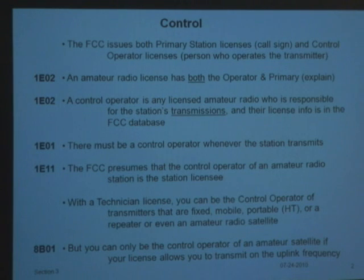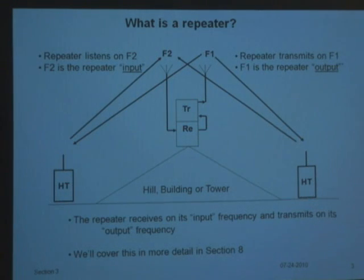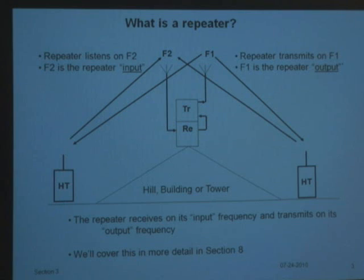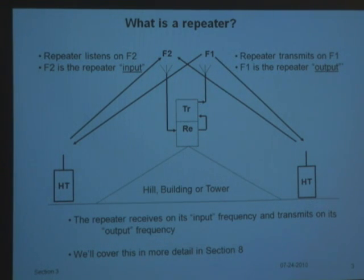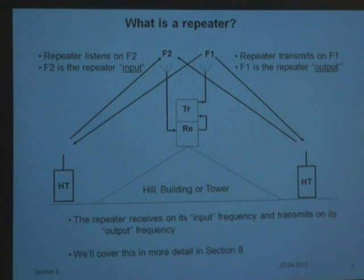Now let's get into repeaters. It's a little radio. If someone was over in Redondo Beach or Torrance, and someone else was on the other side of Palos Verdes down in the Terrace area, these two people cannot talk to each other directly on these frequencies because little radios don't go through hills or mountains.